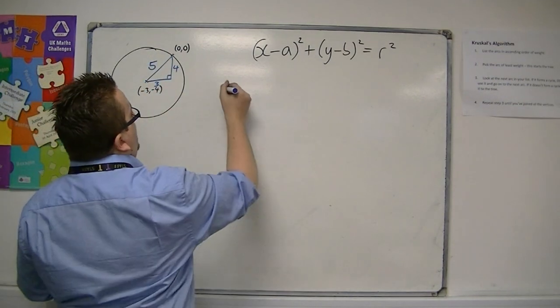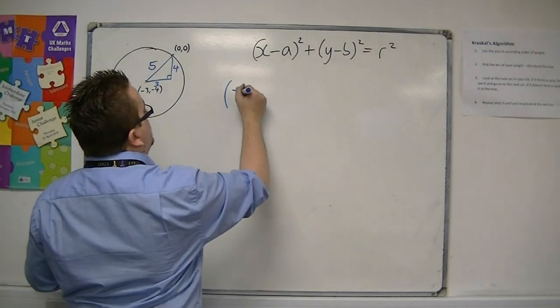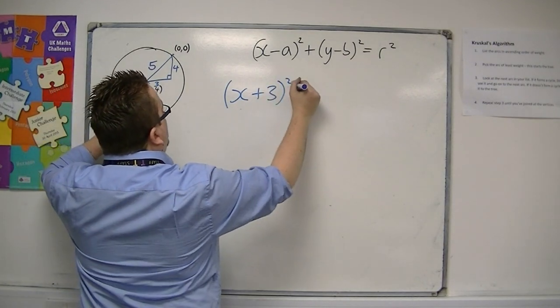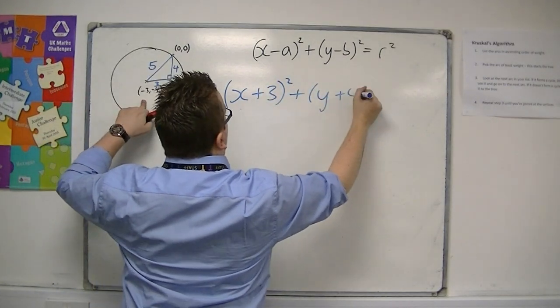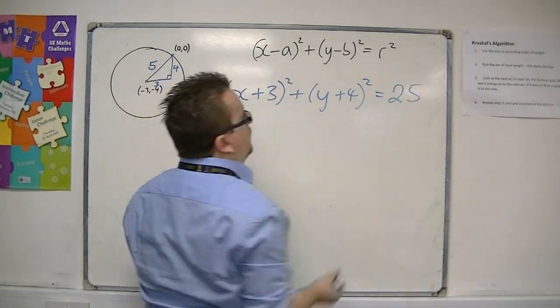So that means I can immediately write down the equation of this circle by saying that we've got x plus 3 squared plus y plus 4 squared is equal to 5 squared, which is just 25.